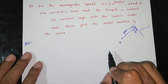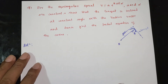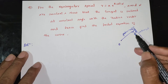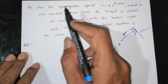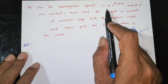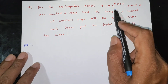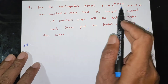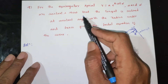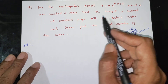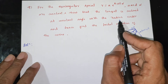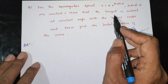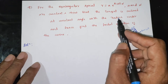Phi is constant. Phi is the angle between the radius vector and the tangent, and it is constant. For the equiangular spiral R is equal to A into E power theta cot alpha, where A and alpha are constants, so that the tangent is inclined at a constant angle with the radius vector. The angle between tangent and radius vector is phi, and phi is constant.